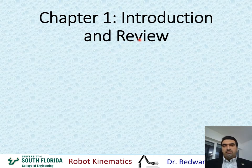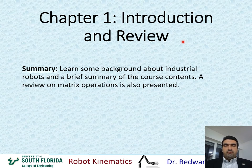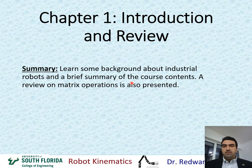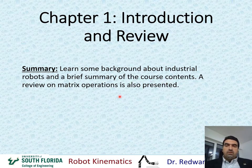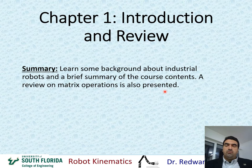Starting with chapter one: introduction and review. The summary for this chapter is to learn some background about industrial robots and a brief summary of the course contents. We're going to talk more about the topics covered in the textbook, and do some review on matrix operations and trigonometric functions that will be needed for this course.